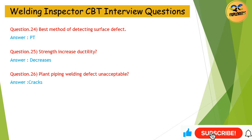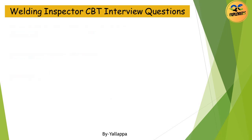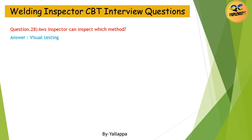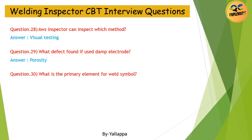Question 26: What is a plant piping welding defect that is unacceptable? Answer: Cracks. Question 27: Purging helps to protect the molten weld pool — True. Question 28: AWS inspector can inspect using which method? Answer: Visual Testing. Question 29: What defect is found if a damp electrode is used? Answer: Porosity. Question 30: What is the primary element for a weld symbol? Answer: Reference line.